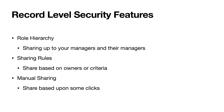Now let's move on to record level security. Record level security covers the individual leads, accounts, and opportunities that you have in your Salesforce org. There are typically three main features for record level security, and just like object level security kind of goes in order of opening up access, this is somewhat similar. Those three features are: role hierarchy, sharing rules, and manual sharing.